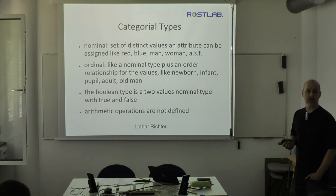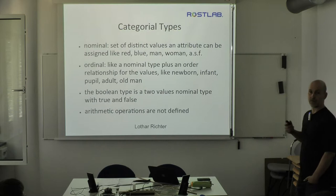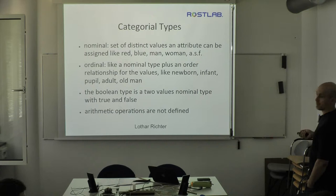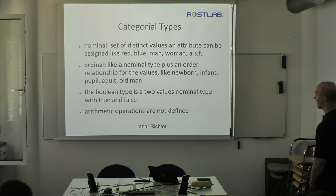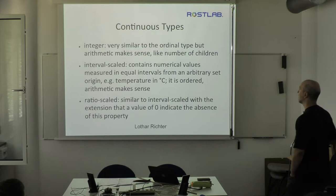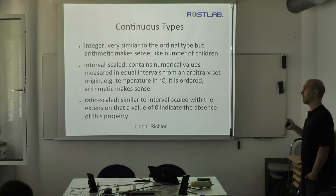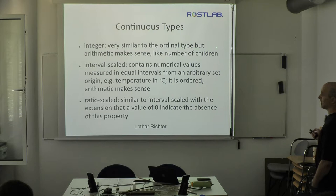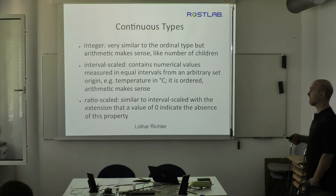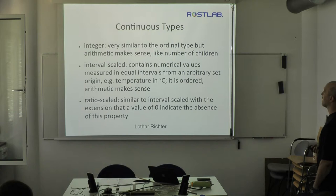Unfortunately most machine learning tools do not support ordinal types, so you may have to create your own features by representing comparisons between values. The boolean type, which often comes as a type of its own, is actually a special nominal type — it can be either true or false. Then the other big section of variable types are the continuous types. The integer type still resembles nominal but arithmetic makes sense — for example, number of children or yearly income, where you can add, subtract, and compare.